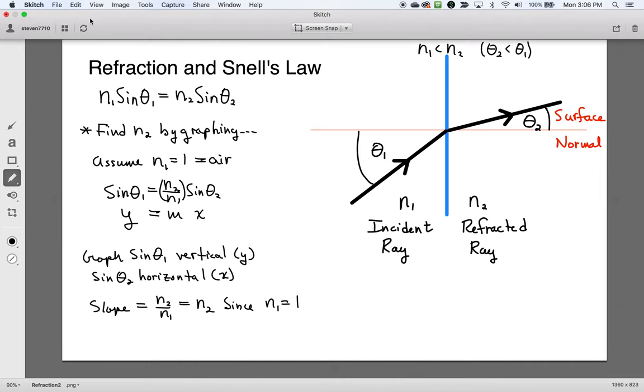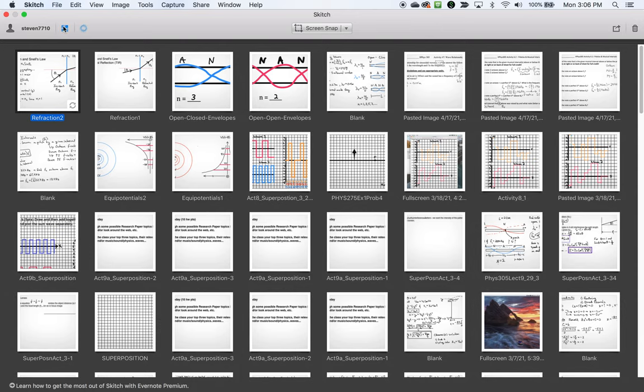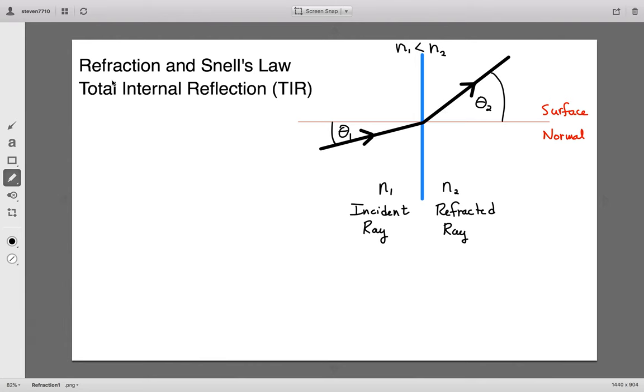The second part of the lab concerns total internal reflection. And so what happens here is now you reverse everything. I haven't changed the numbers, but I have changed the overall effect. When you flip the experimental semicircular piece of material around and the light initially goes through the circular interface and then hits the flat interface, that flat interface will be between being in a material...